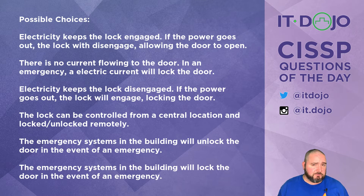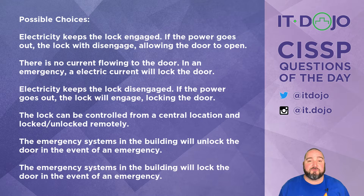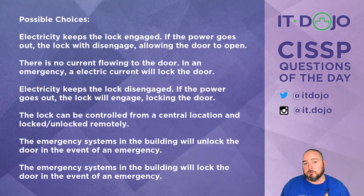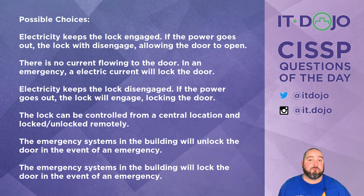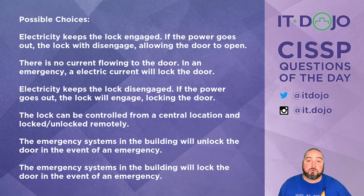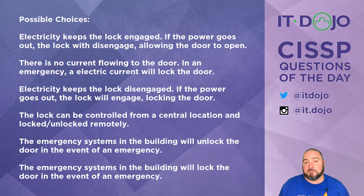We've got fail safe and fail secure — these terms can be confusing. Think of it like this: if you want something to fail safe, you want it to fail safe for people. If you want something to fail secure, you want it to fail secure for your stuff. When something fails safe, it fails to a safe or unlocked state. When something fails secure, it fails to a secure state that continues to protect your stuff from being stolen.